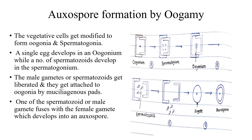The zygote then forms an auxospore, and the auxospore germinates to give rise to an individual diatom cell of the parent size. So again, we can regain the cell size.